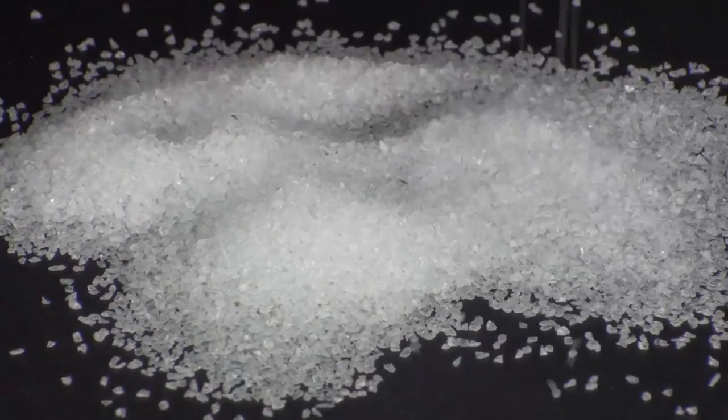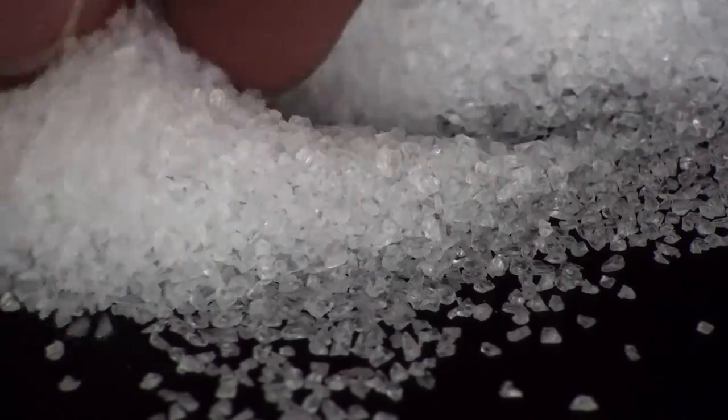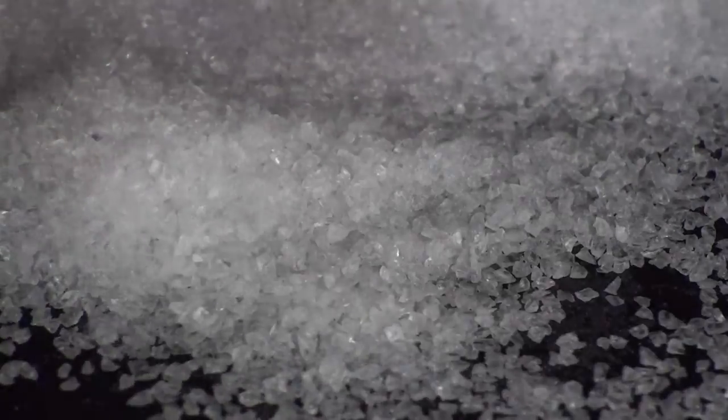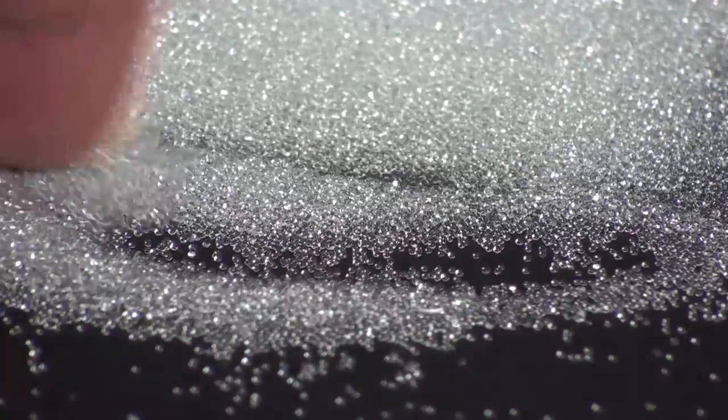The particles in clear granular gel are hard, clear bits of acrylic plastic. They vary in shape and are about the size and consistency of coarse sea salt. Glass bead gel contains actual glass beads about the size and consistency of poppy seeds.